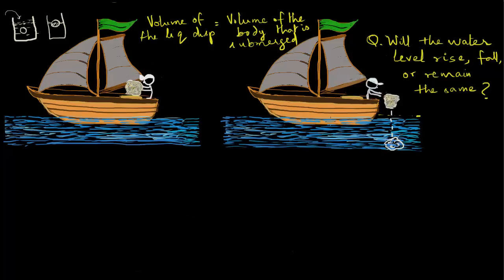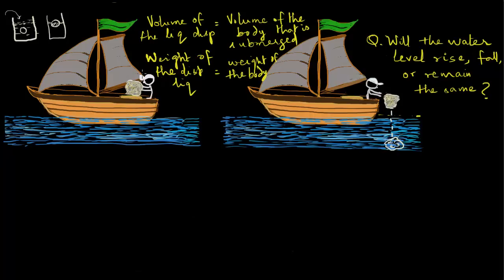Remember that this rock was once on the sailboat, and the sailboat has been floating at all times. Based on Archimedes' principle, we know that according to the law of flotation, the weight of the displaced liquid equals the weight of the body — in this case the sailboat. When the rock is offloaded, the boat suddenly becomes lighter, the volume of displaced liquid is lower than before, because the law of flotation still applies and the weight of the body is now lower. So the water level should actually go down.